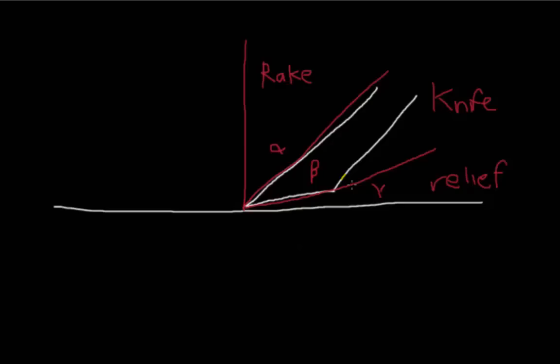But a smaller angle for the knife angle will make the cutting tool a lot more sharper and able to penetrate better. So it's a balancing act between having the strength and the penetrability of the tool itself.